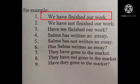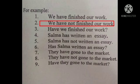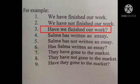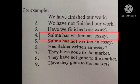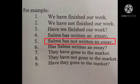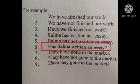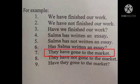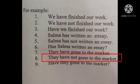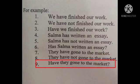Here are some examples about Present Perfect Tense: 'We have finished our work.' 'We have not finished our work.' 'Have we finished our work?' — 'Salma has written an essay.' 'Salma has not written an essay.' 'Has Salma written an essay?' — 'They have gone to the market.' 'They have not gone to the market.' 'Have they gone to the market?'